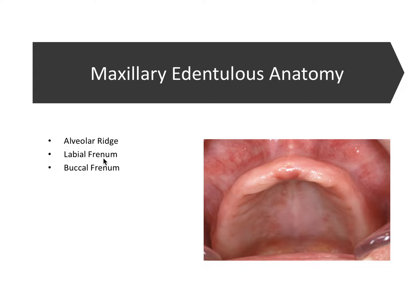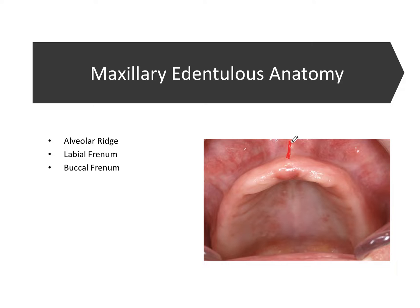Next I want to talk about the frenal attachments, which are sometimes called the frenum or the frenulum. They are thin folds of mucous membrane with enclosed muscle fibers that restrict or secure movement of mobile tissue. The labial frenum is typically right at or just adjacent to the midline of the patient — it's a fold of mucous membrane tissue that restricts or secures movement of the labial mucosa and the lips.